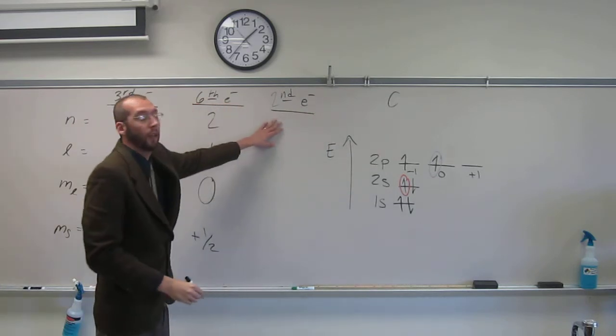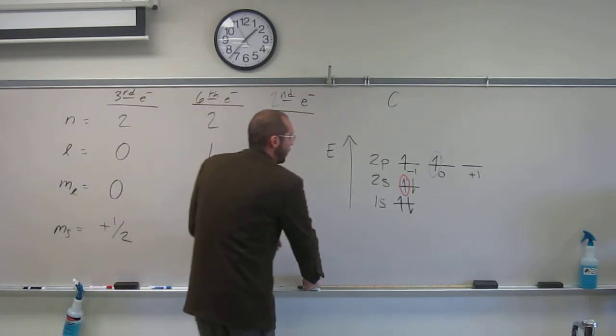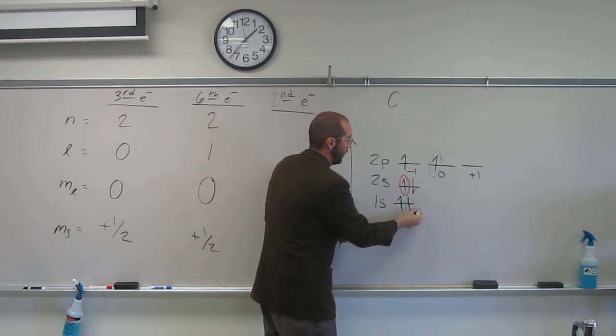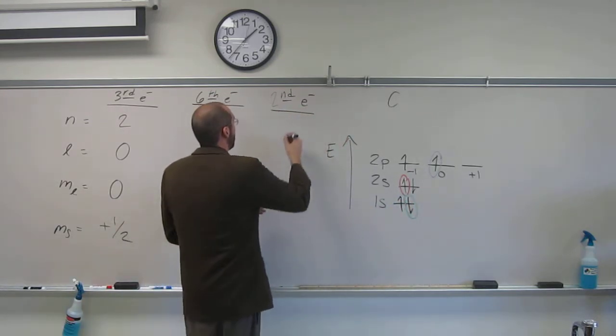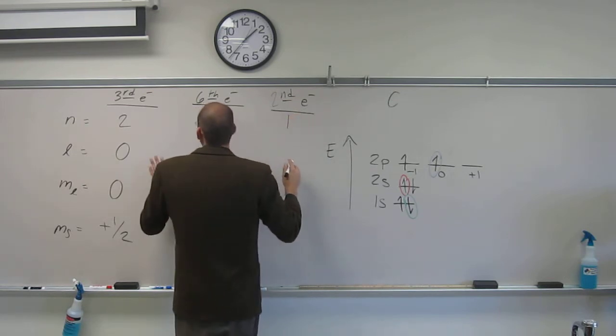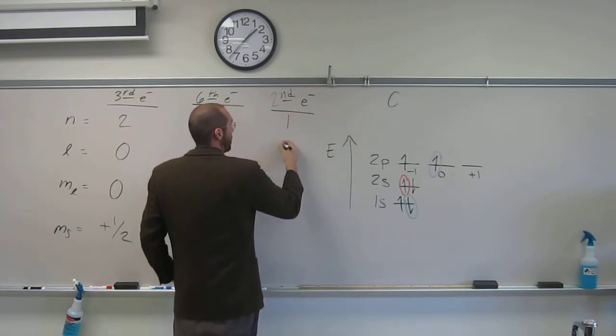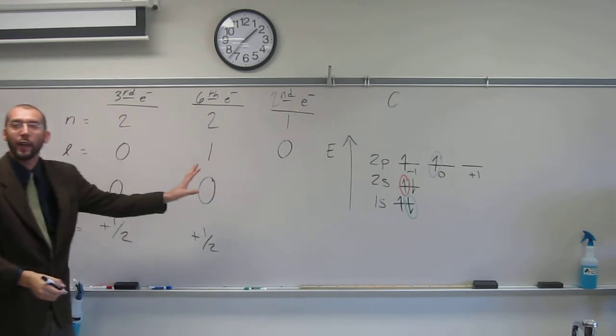So what would n be? Well, let's circle it. So which one would be the second one? This one here, right? So what would n be? 1. What would l be? 0. Why, because it's an s orbital?